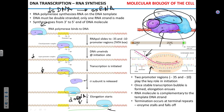RNA polymerase has to bind double-stranded DNA. It binds to a region called the promoter region. The function of the promoter is to mark the starting point — that's how RNA polymerase recognizes where to bind. If the promoter is blocked, there will be no transcription; if it is open, transcription will proceed. So you can regulate whether a gene is transcribed by blocking or unblocking the promoter.